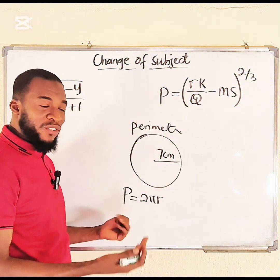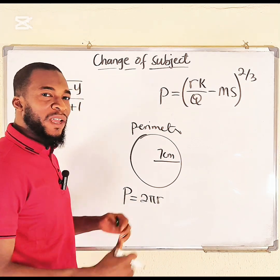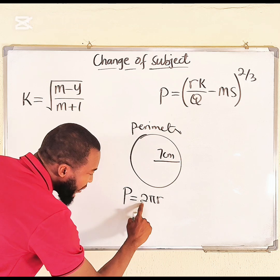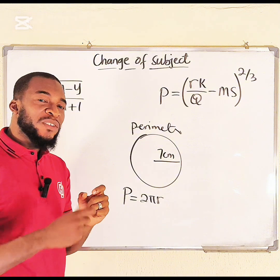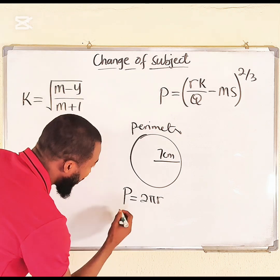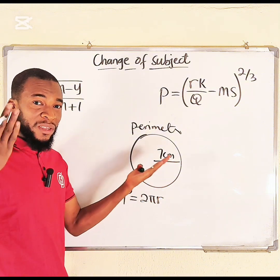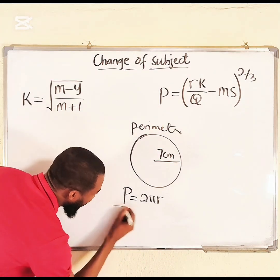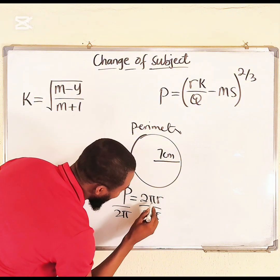So what if you are asked to make r the subject? You have to make sure that r stands alone without anything attached to it. By dividing both sides by 2π — because the relationship between r and 2π is multiplication, and the inverse of multiplication is division — you divide both sides by 2π. Just like a scale, whatever you do to one side you must do to the other.